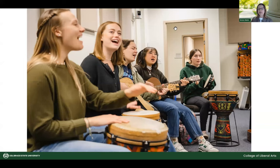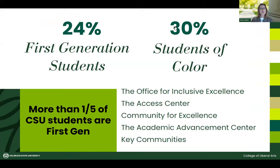We have quite a large group of students that are first-generation students, meaning they are the first person in their family to go to university. We have 30% students of color, and we have five excellent resources for students that are first-generation — even if you're not first-generation. These are places where you can learn how to balance your schedule, access food, build community, or find support in different spaces on campus.